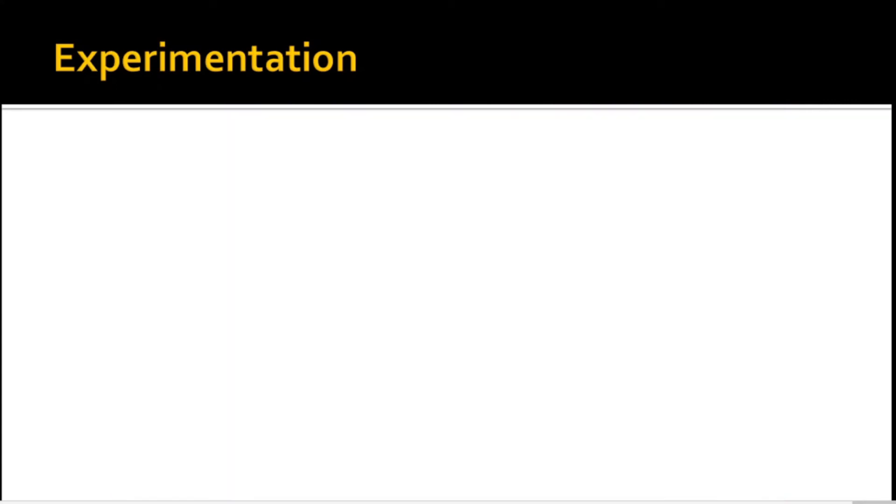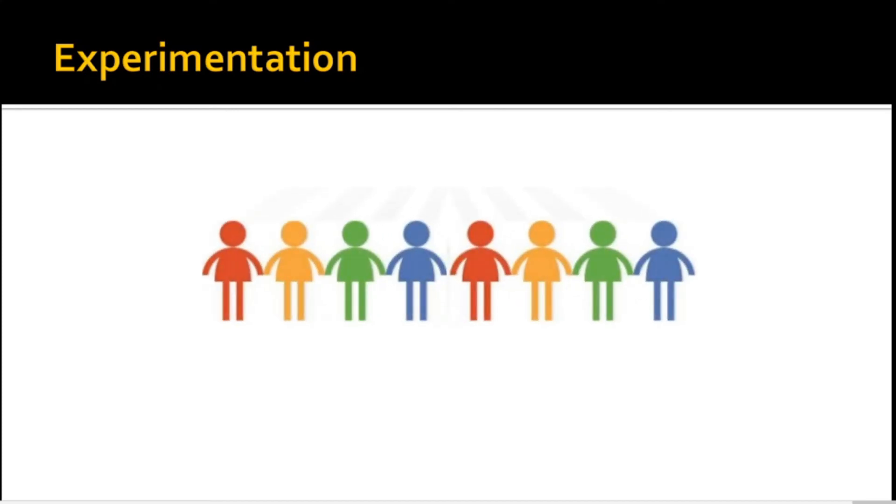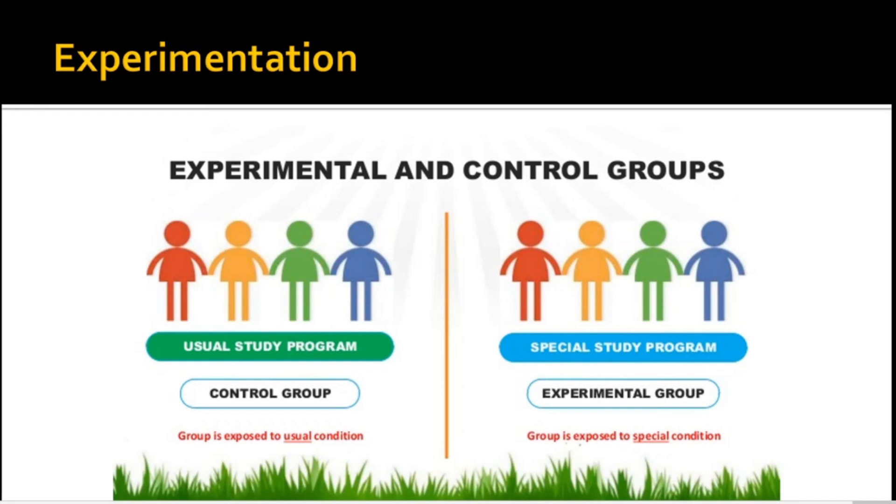Experimentations are conducted to human subjects as well. For example, if one wants to test the effectivity of a special study program over the traditional or usual program, a researcher may divide the subjects into two groups. One is the experimental group and the other the control group. The experimental group will be exposed to the special program while the control group to the traditional program. Their performance will be compared after these exposures. Again, it is important for the researcher to control at his very best outside factors that affect students' behaviors or performance.